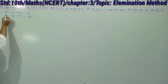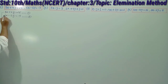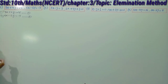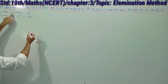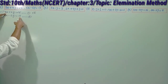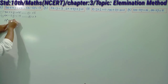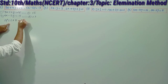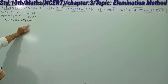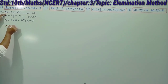Let us practise with these questions. You can see that the coefficient of x in the first equation is 3 and in the second equation it is 5. So your target is to multiply equation 1 by 5 and equation 2 by 3 to eliminate x. So equation 1 — 3x plus 4y equals 25 — will be multiplied by 5, and equation 2 — 5x minus 6y equals minus 9 — will be multiplied by 3. Write: equation 1 multiplied by 5, minus equation 2 multiplied by 3.